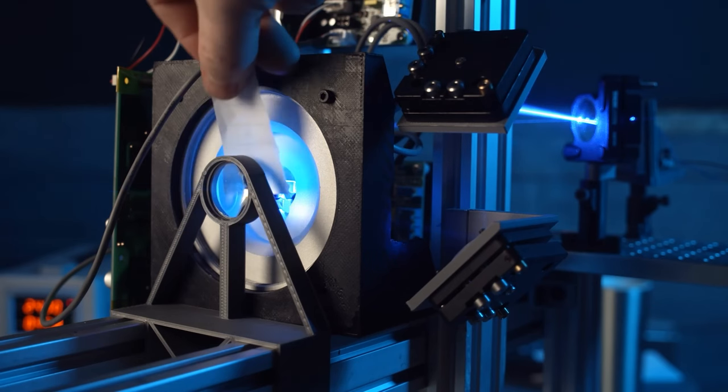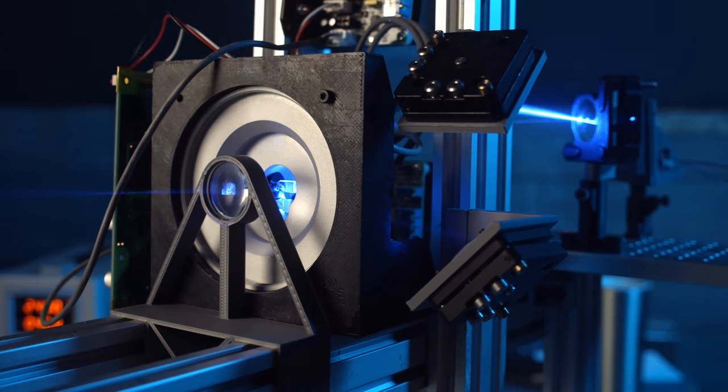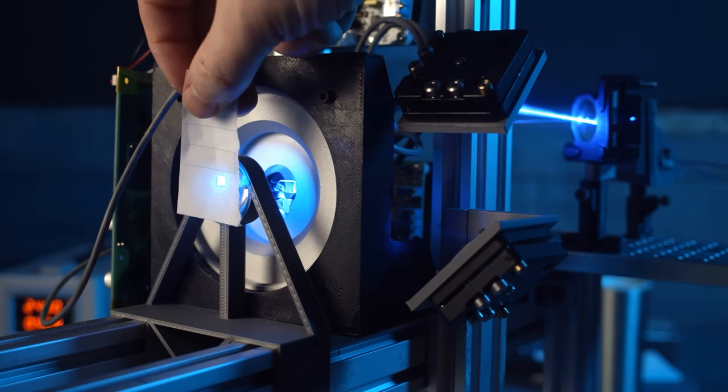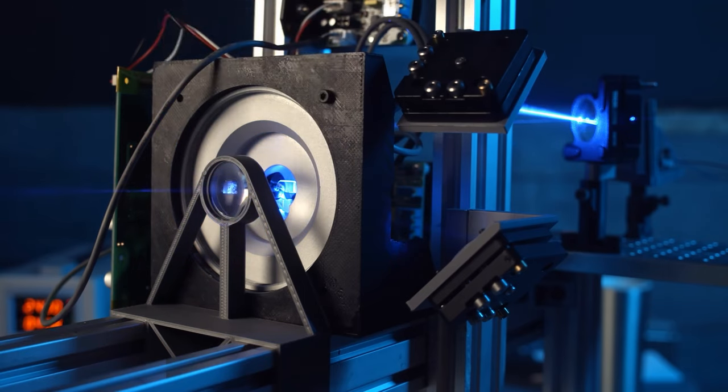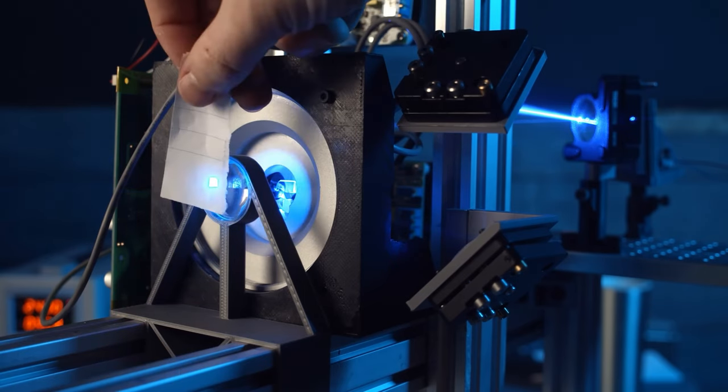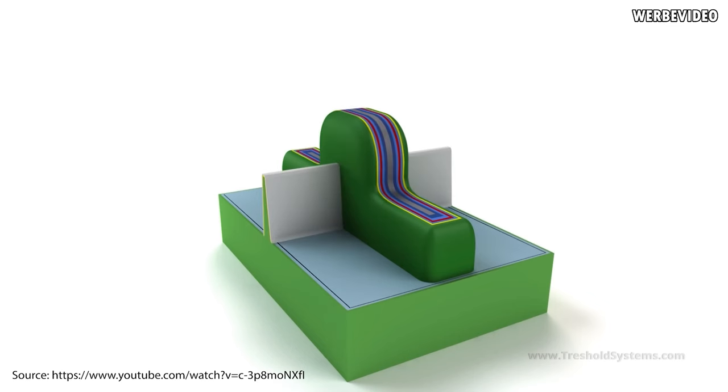It seems like nothing too complicated. But then, why is every new process node so difficult to achieve? What is the limiter? The answer may surprise you: the wavelength of the radiation. It's the light passing through the mask that leaves the real outlines of transistors on the photoresist. And if we use visible light, the minimum wavelength of which is about 380 nm in the violet spectrum, you will not be able to use it to create a transistor the smallest part of which is significantly smaller than this wavelength, even if you use lenses.